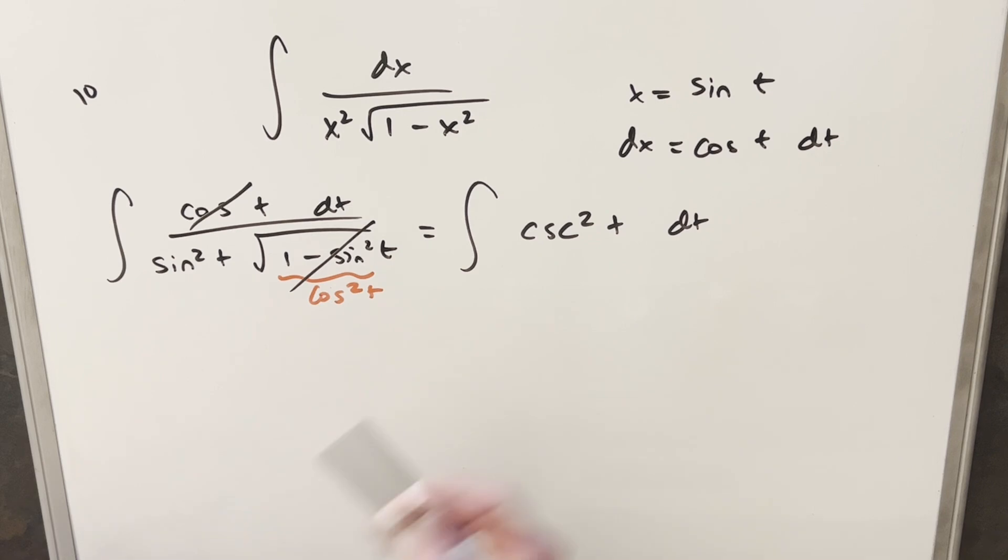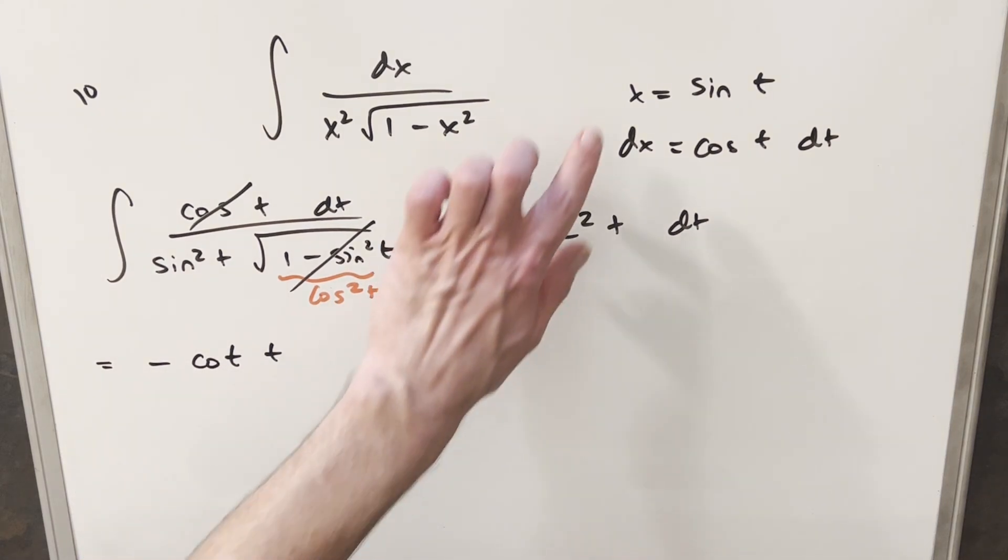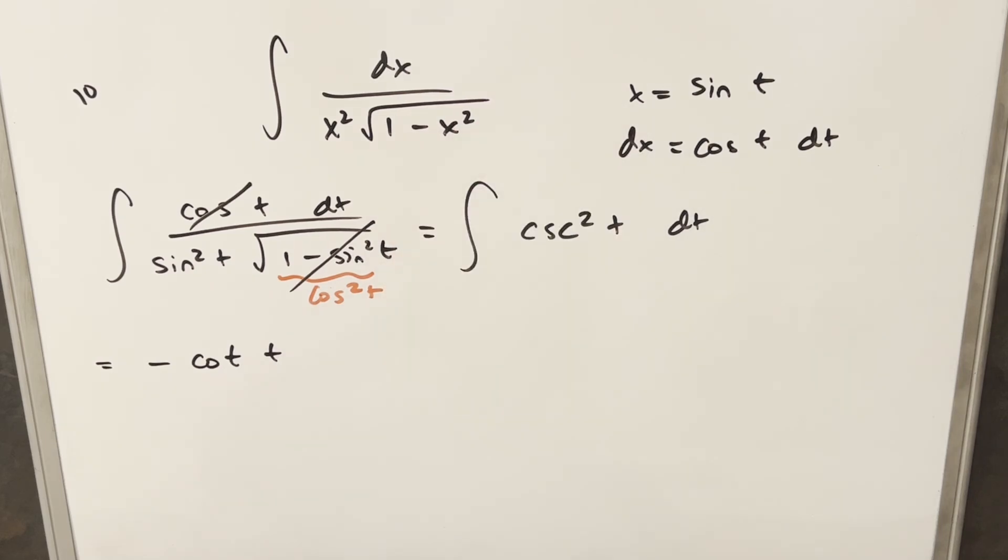But cosecant squared t, this is actually a very common integral. This is going to be actually minus cotangent of t. But then from here, all I need to do is get a value for cotangent of t. And we have this value x equals sine of t.